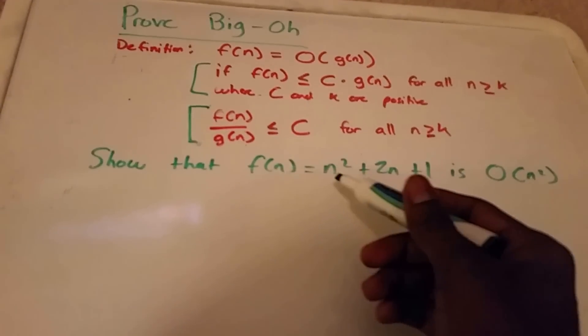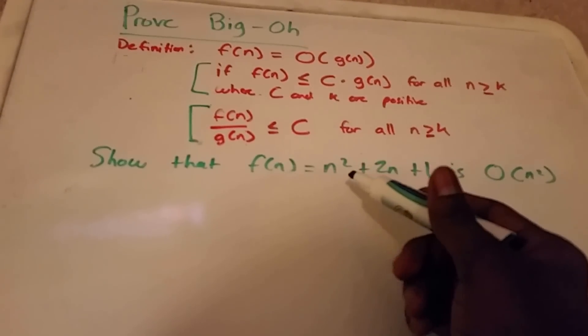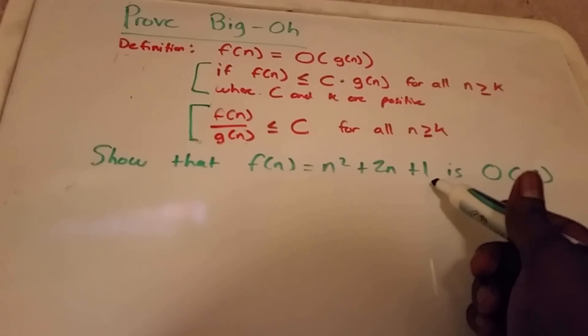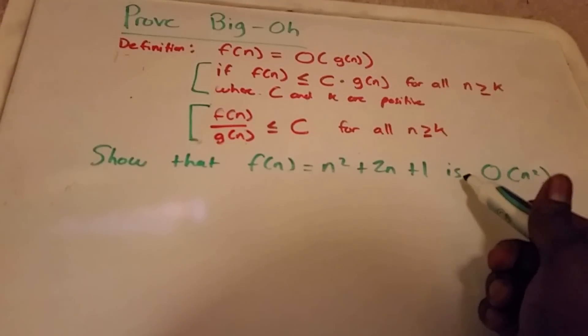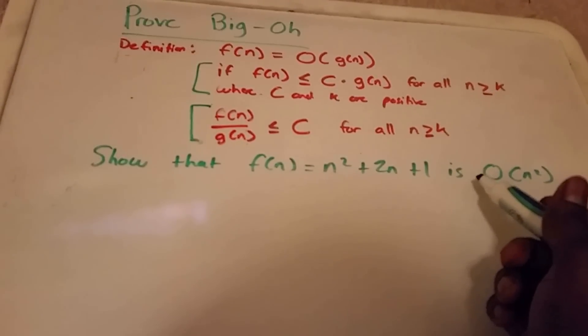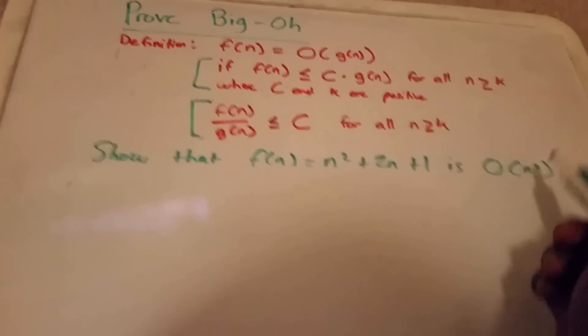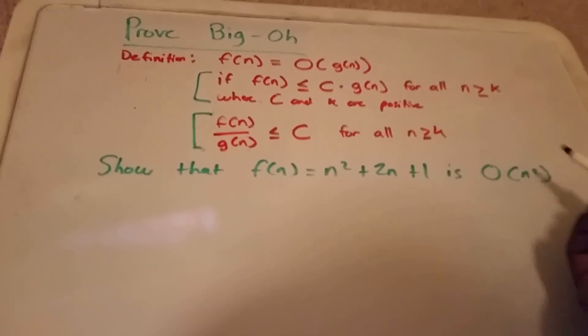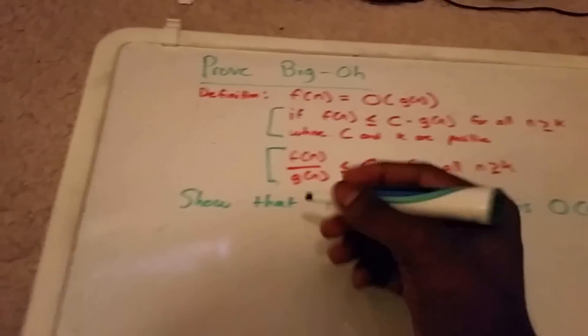So here we have f of n equals n squared plus 2n plus 1, and we want to prove that it is Big O of n squared, or that it belongs to Big O of n squared.